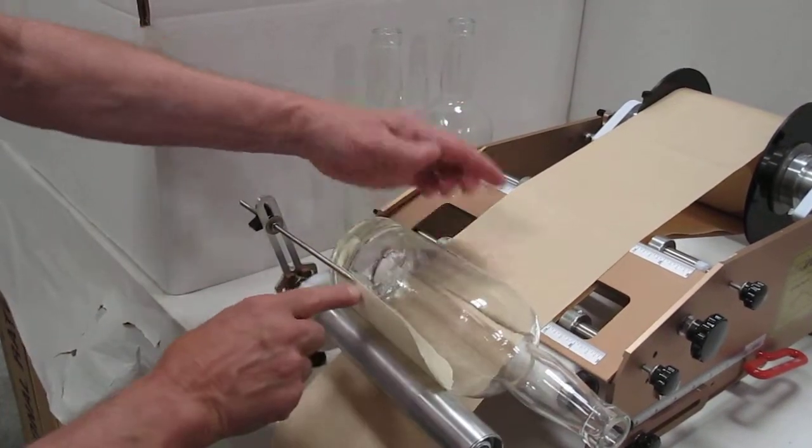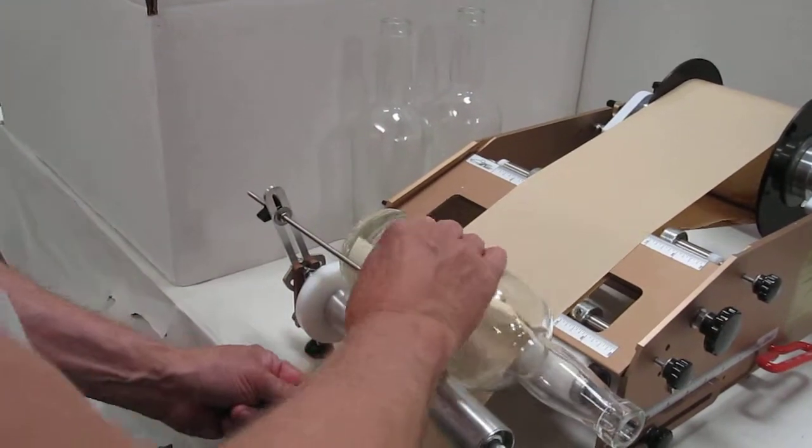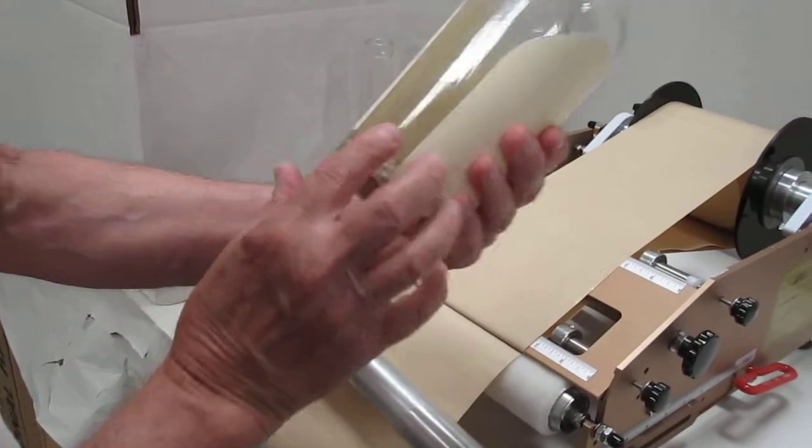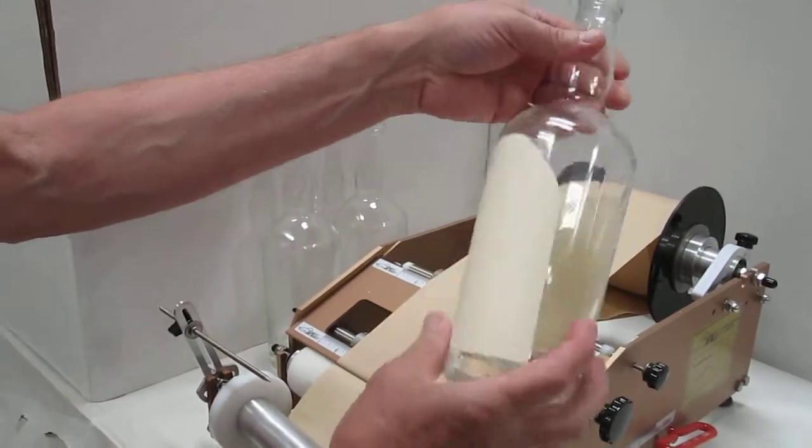When you bring the leading edge of the already applied front label to the gap indicator and apply the back label, it gives you an even gap between the front and back label.